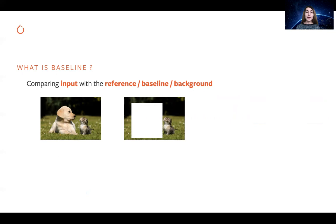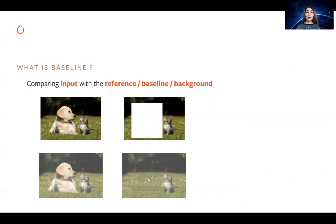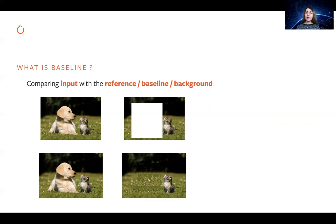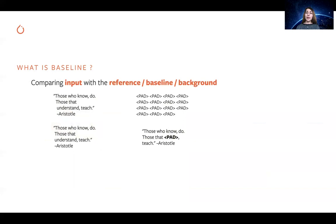In the case of an image, if we predict a dog and want to know what is important for that prediction, we need another image where there is no dog. We can take a random image, or ablate the dog by replacing it with a rectangle. However, this may create a baseline that is out of our data distribution, so instead we might use a background. For text, we can compare with a sequence of uninformative tokens, or perturb one token to see how important it is for our prediction.